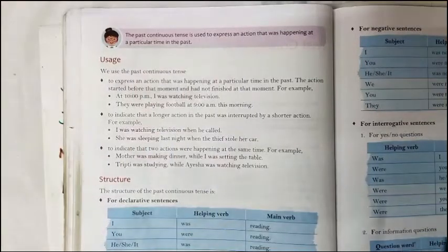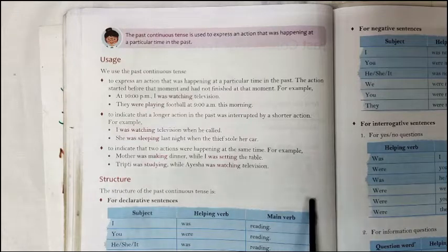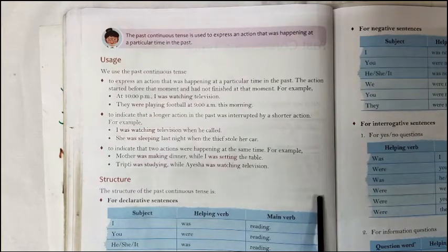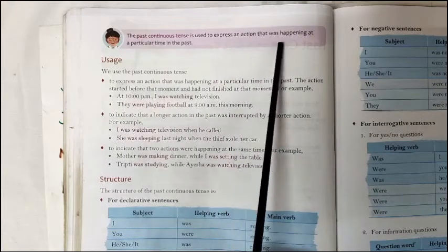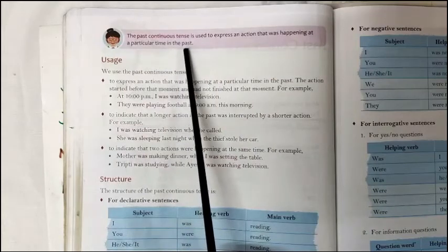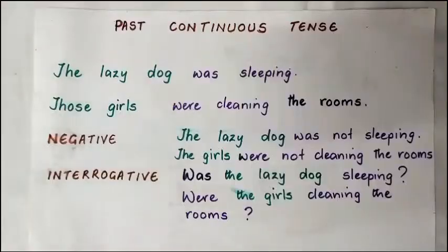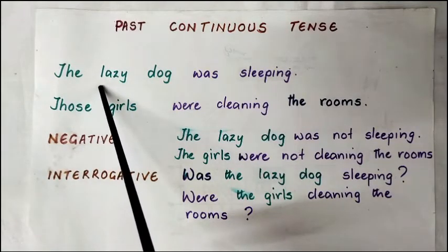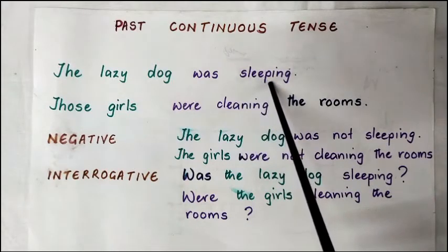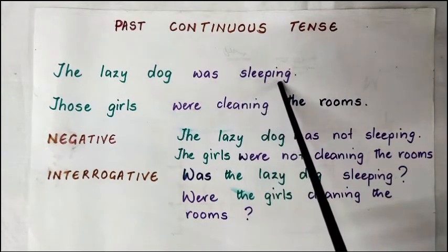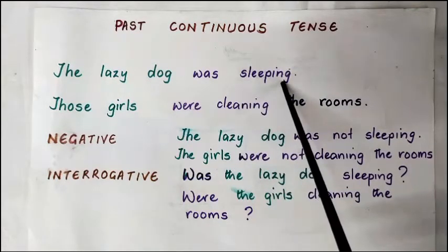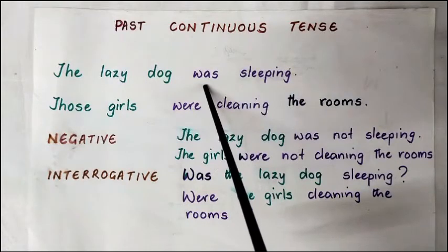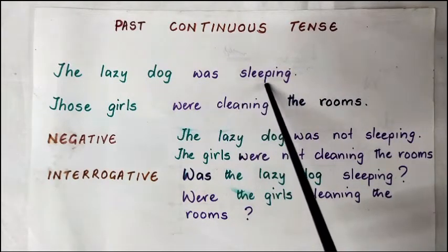If you turn the page over to page 70, you will find the use of the past continuous tense. The past continuous tense is used to express an action that was happening at a particular time in the past. I have written down a few examples here. The first example: the lazy dog was sleeping. 'Was sleeping' is in the past continuous tense — these two verbs make up the past continuous tense. 'Was' is the auxiliary or helping verb and 'sleeping' is the principal verb.